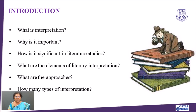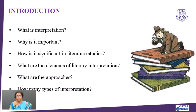If you talk about the elements of literary interpretation, you should actually talk about the genres of literature. We have got three or four major genres: prose, poetry, drama, and fiction. When you have prose, poetry, drama, and fiction, each one will have different literary elements.